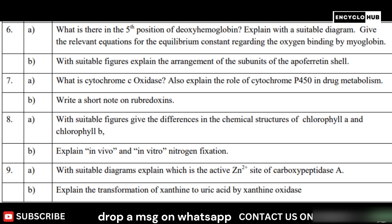Question: Explain the transformation of xanthine to uric acid by xanthine oxidase. What is the role of metal ion in protein-RNA interaction?